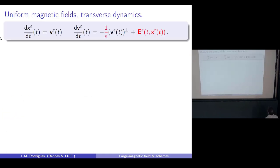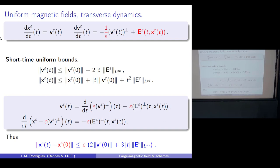Now let me include an electric field. You play the same game: you use the equation showing that v is to leading order oscillating, to say that v is a derivative of something plus an order-epsilon term. You plug that into the equation for x and integrate to get a bound. But now you see that something is missing — there is a motion at the scale you are looking at, namely an electric drift.